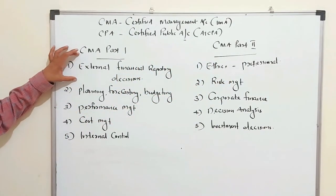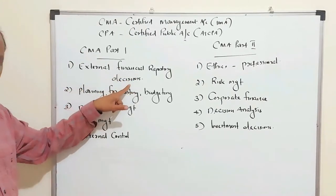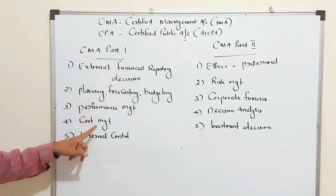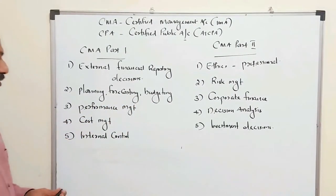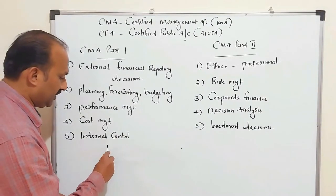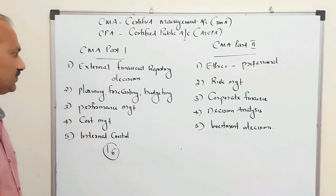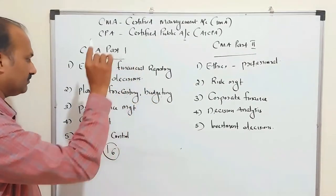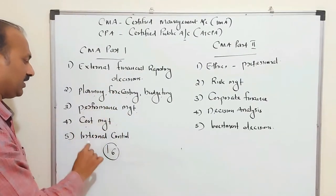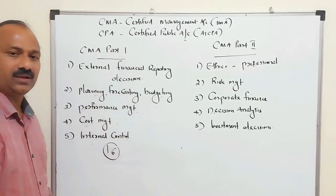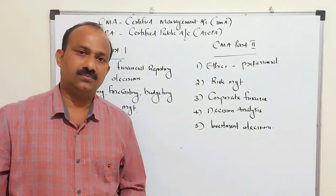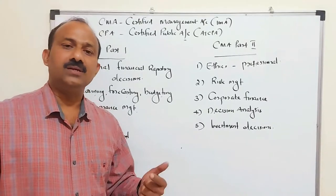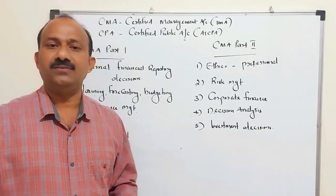Part 1 covers external financial reporting decisions, planning, forecasting, budgeting, performance management, cost management, and internal control — 16 chapters in total. In simple terms, Part 1 covers financial accounting, cost accounting, management accounting, statistics, a little auditing, and internal controlling.